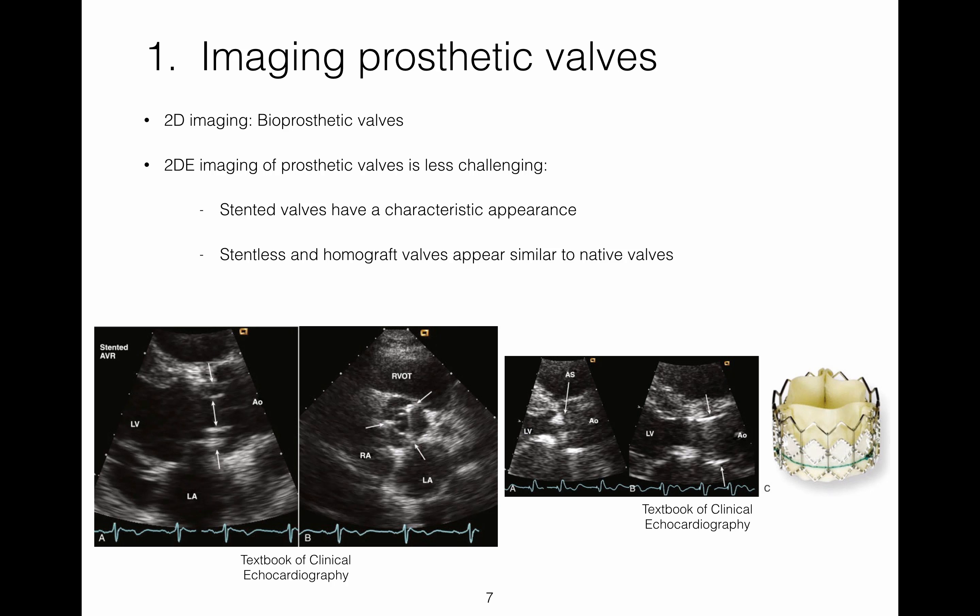2D imaging of bioprosthetic valves is usually less challenging than mechanical valves. Stented valves have a characteristic appearance and often the valve struts are well seen. The arrows on the two larger images on this slide point to the struts and valve orifice of a bioprosthetic stented valve. The smaller images are before and after images of a patient with a calcified aortic valve replaced with a bioprosthetic valve, and the arrows on the second smaller image point to the valve cage.